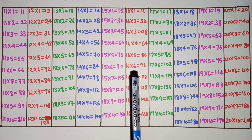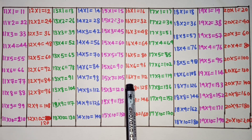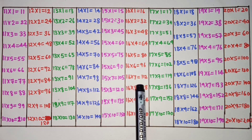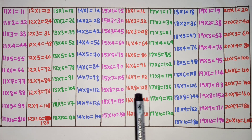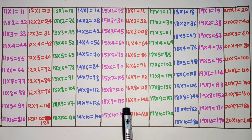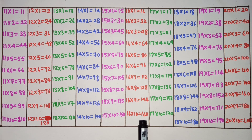16 6s are 96, 16 7s are 112, 16 8s are 128, 16 9s are 144, 16 10s are 14.